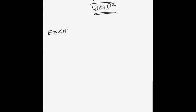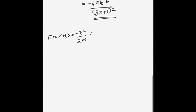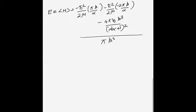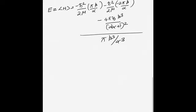Now substituting all integral terms into ⟨H⟩ and taking the reciprocal of the denominator ⟨φ|φ⟩ = πβ³/α³, many terms cancel. The energy expression simplifies to E = ℏ²α²/(2μβ²) − 4V₀α³/(2α+1)².